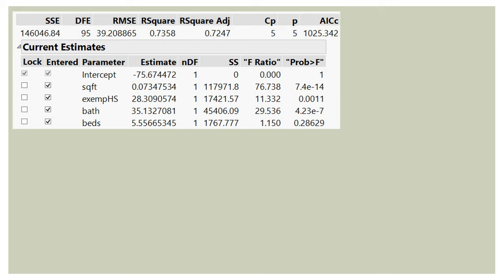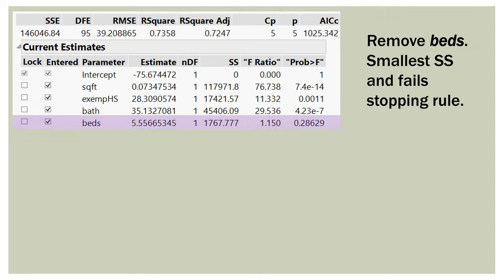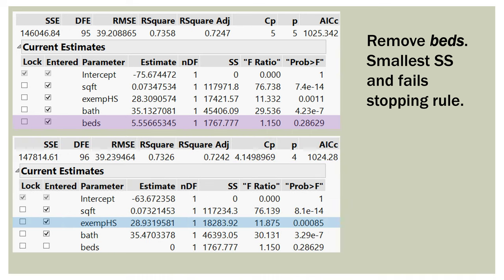So look at our variables. We find the one with the smallest sum of squares contribution, the lowest F ratio, and look at its probability. Well, we can see the probability for beds is 0.28629. That's well above our threshold we set of 0.1 in this case. So we remove beds. It has the smallest sum of squares and it fails our stopping rule.